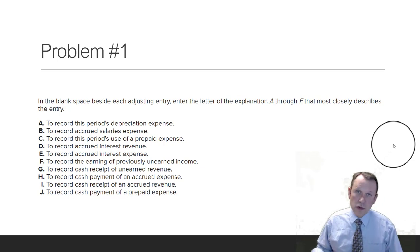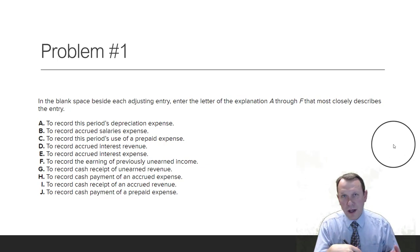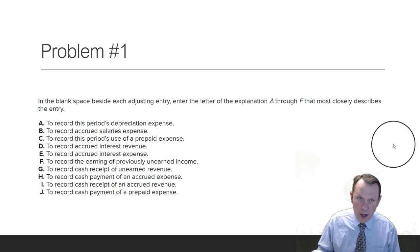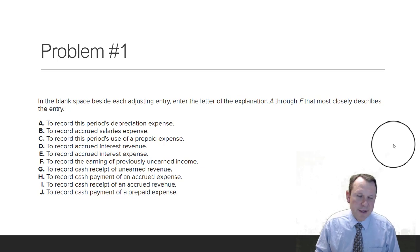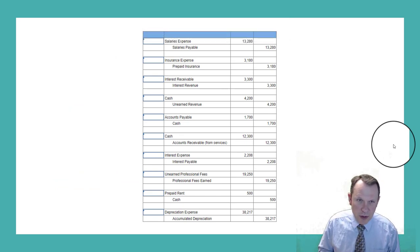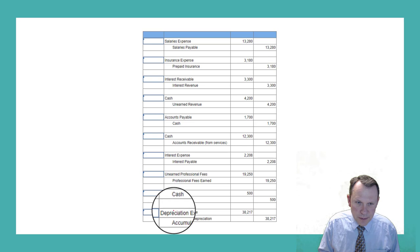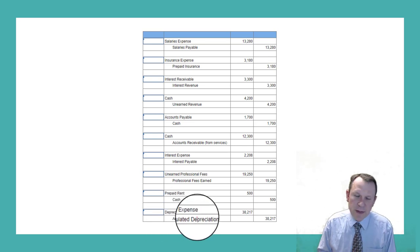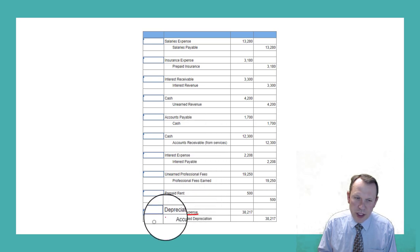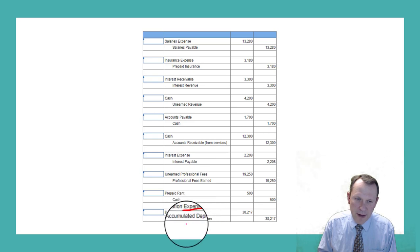These are adjusting entries. Item A is to record the period's depreciation expense. At the end of the period — whether a month, quarter, or year — you do a depreciation adjustment for a piece of equipment, a building, or something like that. That's one possible one. Looking for the word depreciation on our list, we find it: depreciation expense is our debit, and then we have accumulated depreciation.